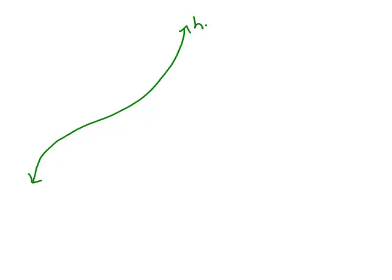Let's try one more with graph h. First, the vertical line test: yes, no matter where you put a vertical line it's not going through it more than once, so this is a function. Does it also pass the horizontal line test? Yes — no matter where you draw it, it passes both tests. So this is a one-to-one function.